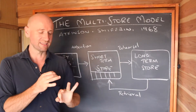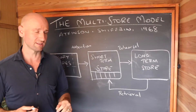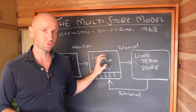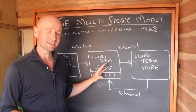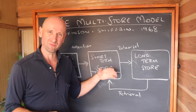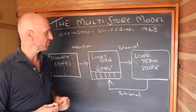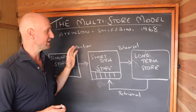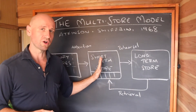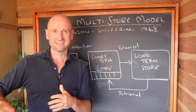HM's case study supports the idea that memory exists in different stores. Peterson and Peterson shows that rehearsal is necessary for transfer and that our short-term store has a limited duration — memory tends to decay if we don't rehearse the information. Glanzer and Cunitz also supports the idea that rehearsal is needed for transfer, and that information in our short-term store only lasts a short time. I'll go into more detail on those studies in a separate video.